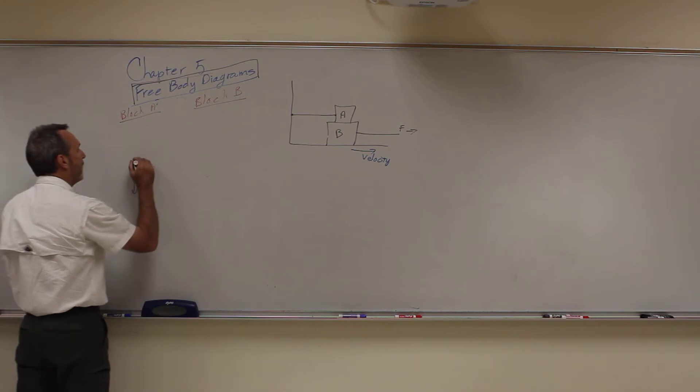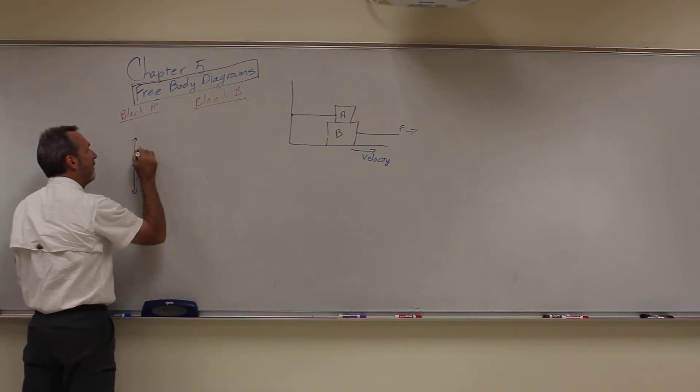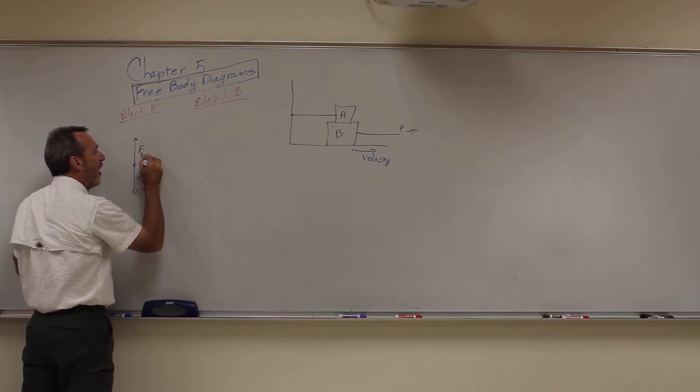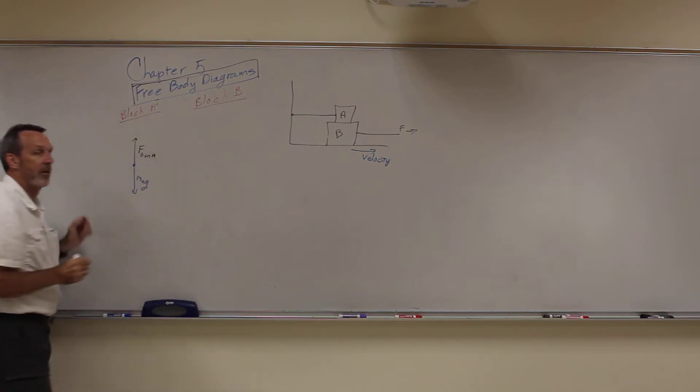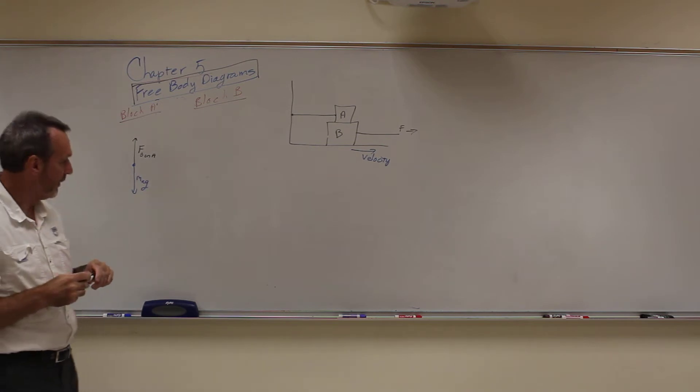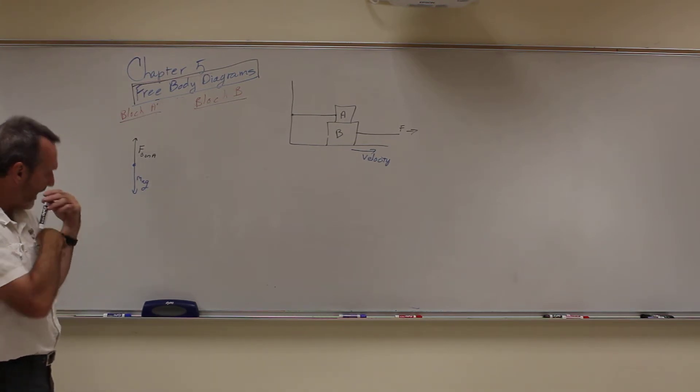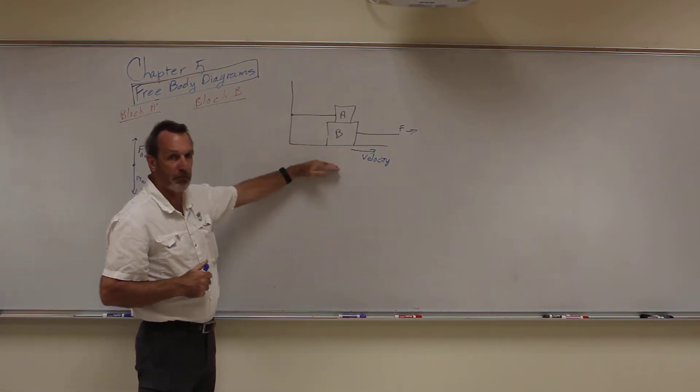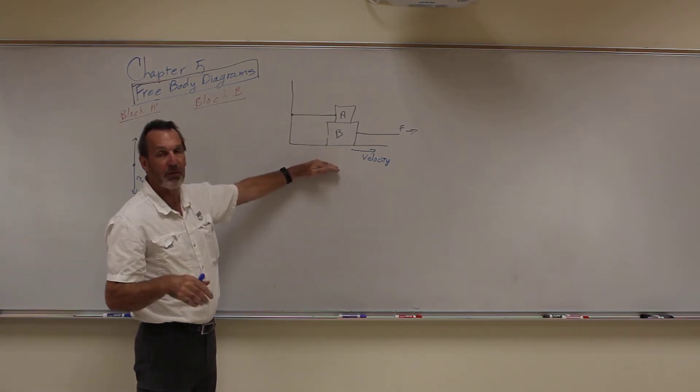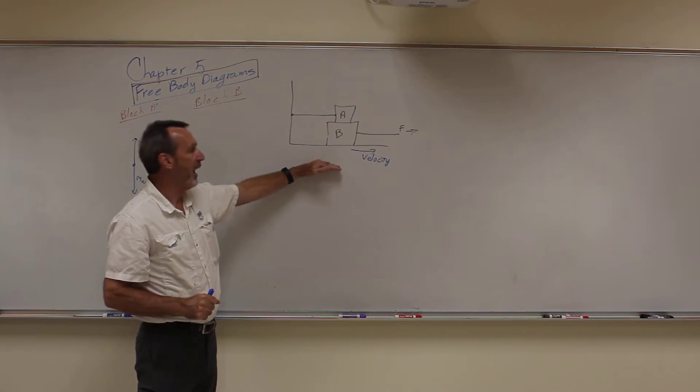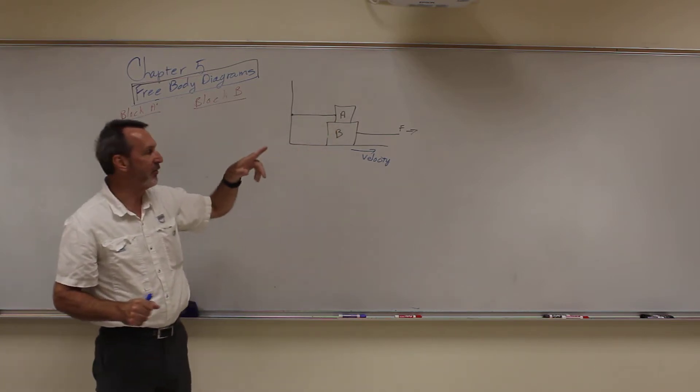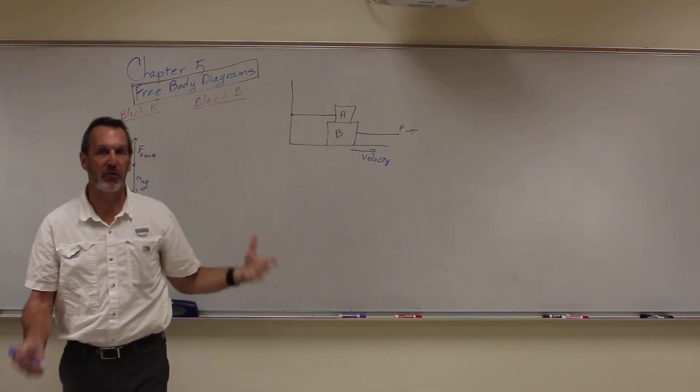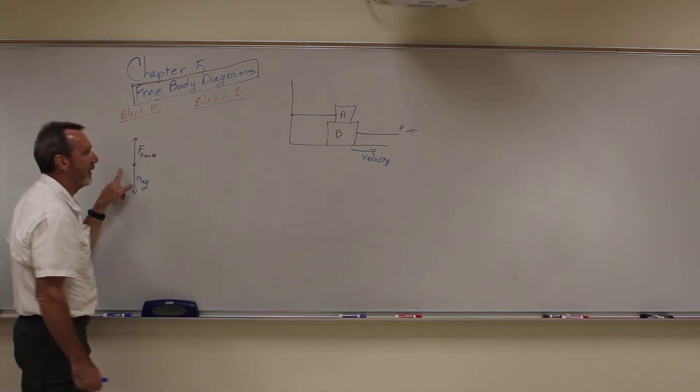So we have a block, a force here. I want you to label this as uppercase F, force of block B on A. Label it like that. It's not a normal force because the problem is I want normal forces only to come from walls or floors or something that is a large fixed surface. I don't want it coming from two blocks connecting to each other because then you have normal forces and you have a different normal force here and here and you get confused because you have too many normal forces. So I want you to write it like this.